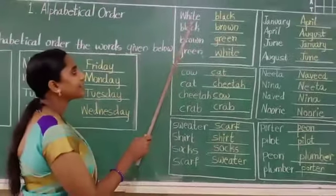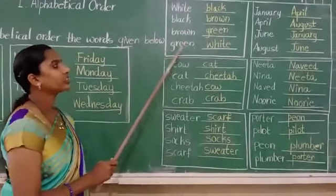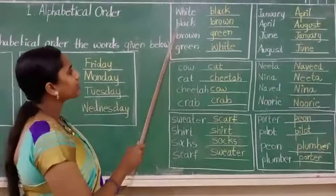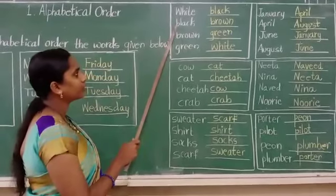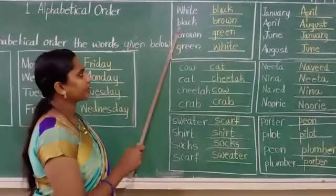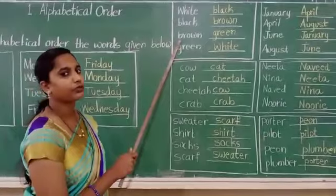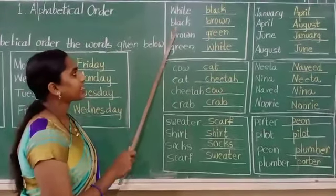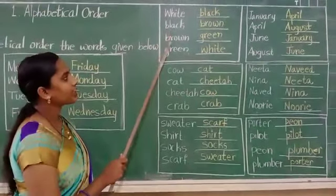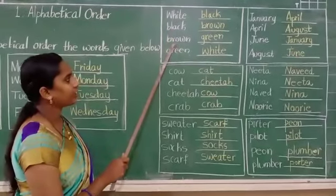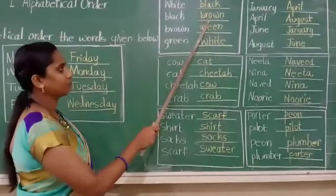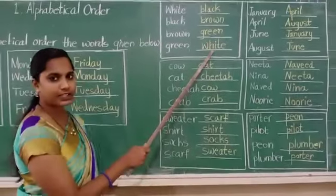Next one: white, black, brown, green. What are these? These are colors. Now you can see the first letter — W, B, B, and B. So in these, the same letter is there: B and B. So in this case, what we have to do? You should see the second letter. If the first letter is same, then you should see the second letter. So here L is there, then A. So which one will be first? Black. Very good. Black, brown, green and white.